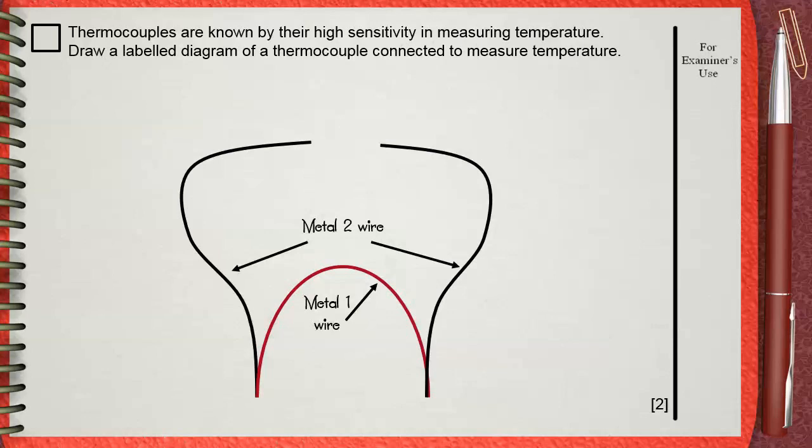Now draw a galvanometer. This will detect any small voltage or current in the device. This is the calibrated galvanometer that will measure temperature based on the small voltage generated here.